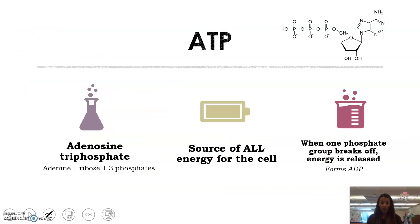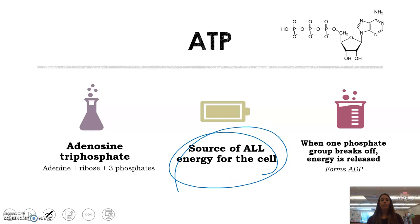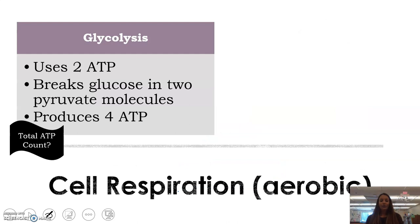We've talked about ATP quite a bit, so let's break it down. ATP stands for adenosine triphosphate. It's made of adenine, ribose, and three phosphates. Keep in mind we'll also hear about ADP, which means diphosphate — just two phosphates. ATP is the source of all energy for the cell. When that phosphate group breaks off, energy is released and we get an ADP molecule, which has no energy and is not useful to the cell until it functions as ATP again.